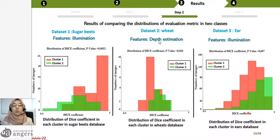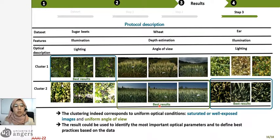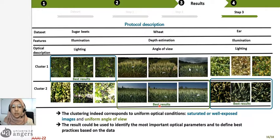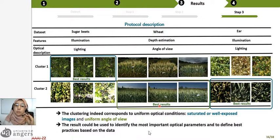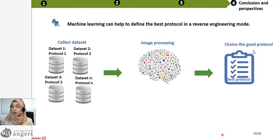For example, here we use the depth estimation and we see two different distributions. Looking at the images in each class, we can see similar optical conditions. For example, the saturation in the first database, and also the angle of view in each class are the same. So, the results can be used to identify the most important optical parameters and define the best practices based on our data. Machine learning can help us to define automatically the best protocols of acquisition, and we are satisfied with our first results.